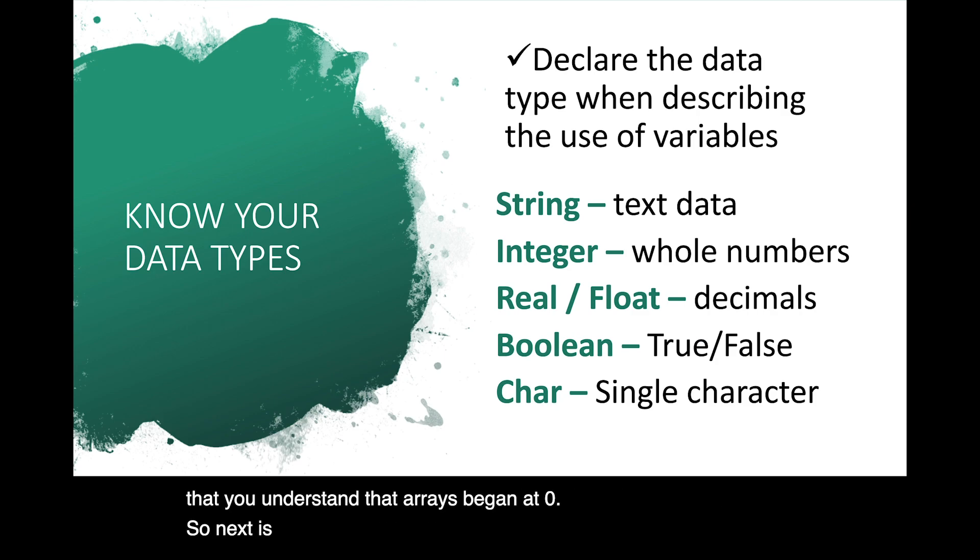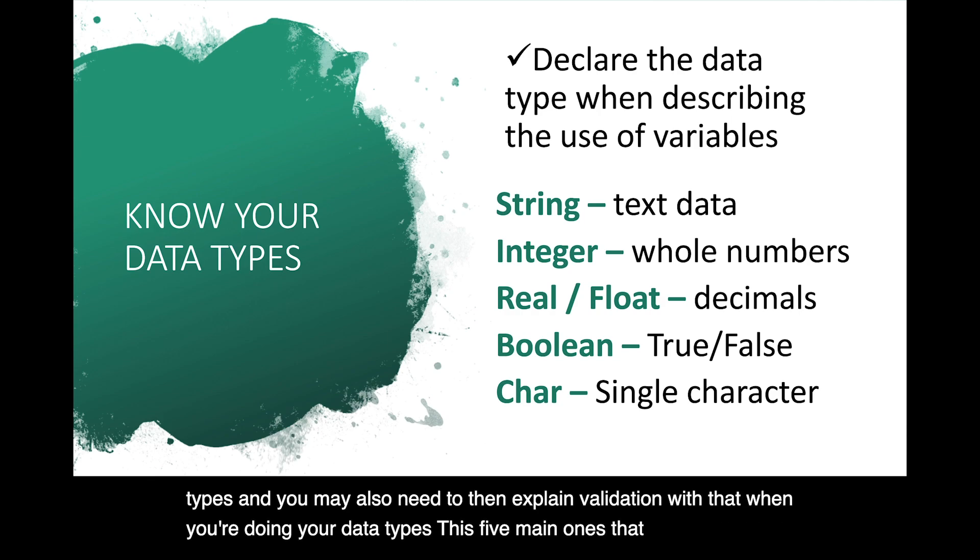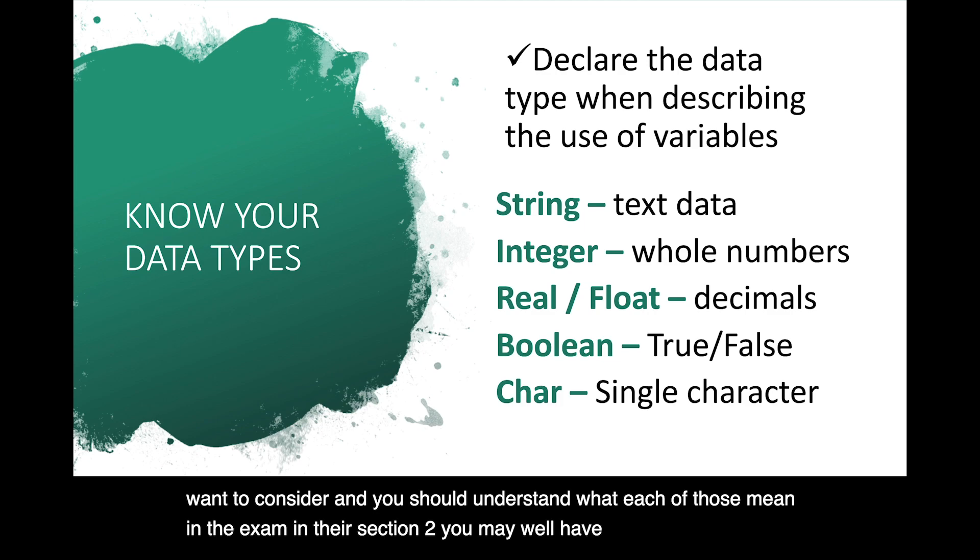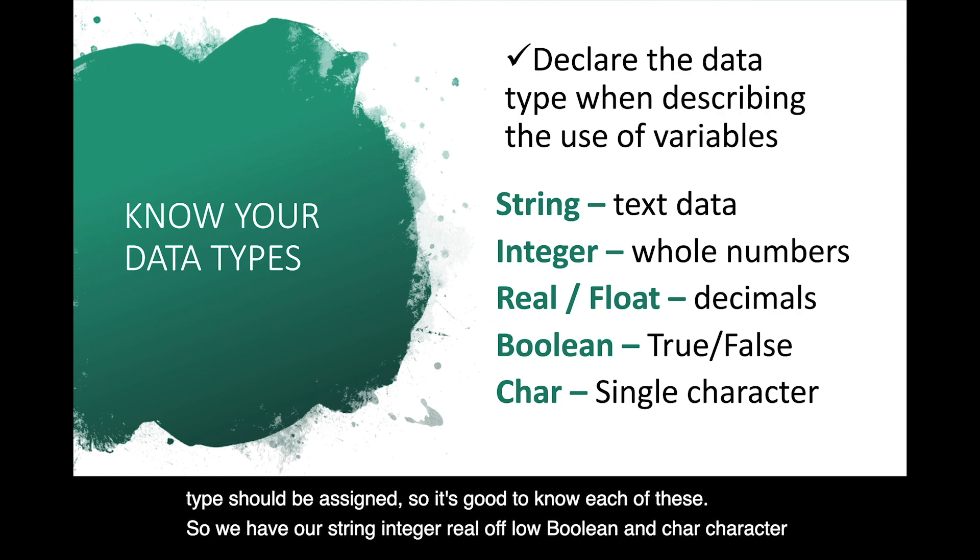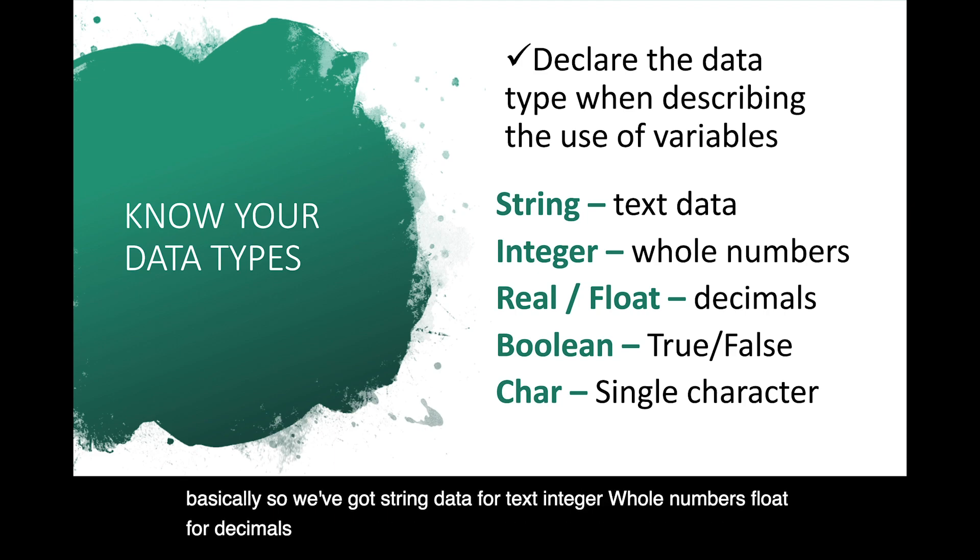So next is about knowing your data types. They will ask you for data types, and you may also need to then explain validation with that. When you're doing your data types, there's five main ones that we're going to want to consider, and you should understand what each of those mean. In the exam, in the section two, you may well have to identify, based on a sentence that explains what the data is to be stored, what that data type should be assigned. So it's good to know each of these. So we've got string data for text, integer for whole numbers, float for decimals, boolean for true, false, yes, no, on, off, anything with sort of two possible responses, and then a character for a single character.